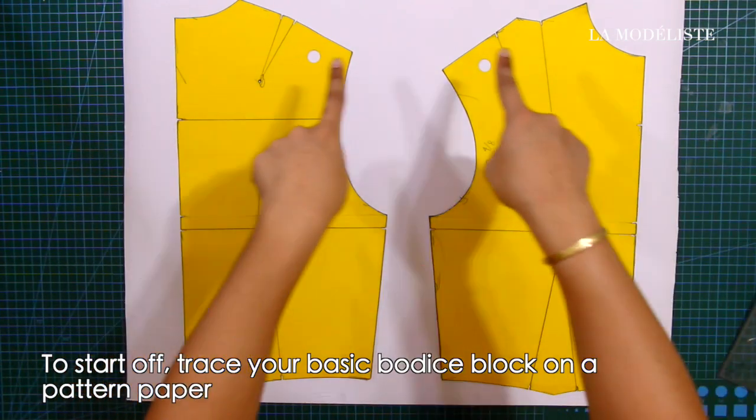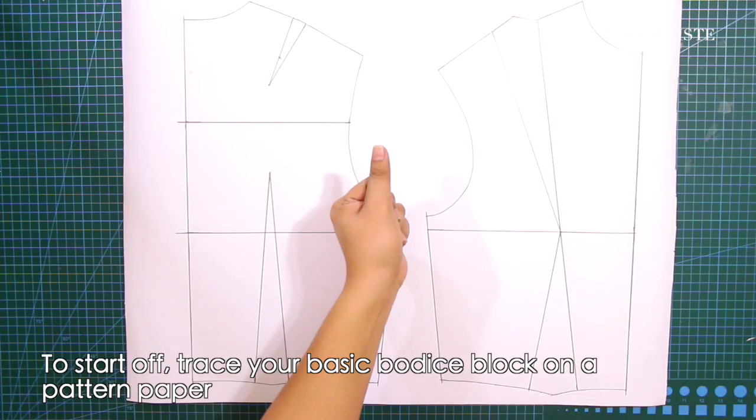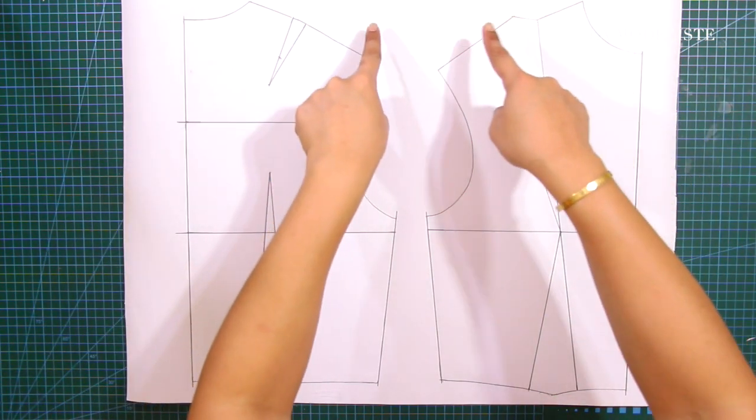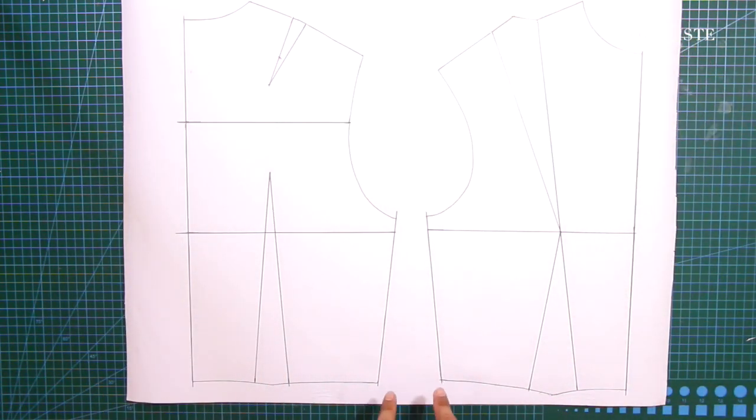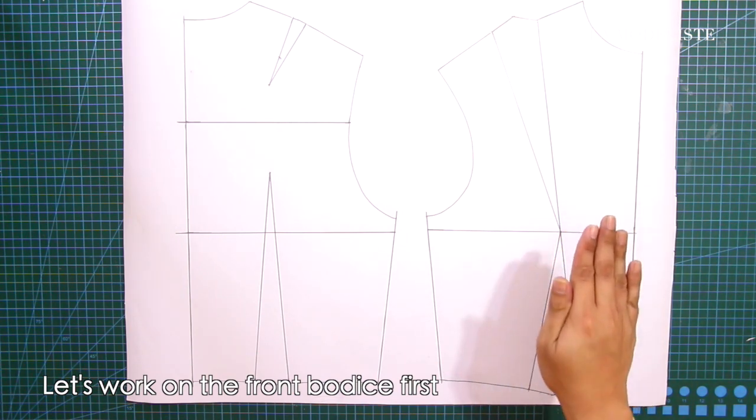To start off, trace your basic bodice block on a pattern paper. Let's work on the front bodice first.